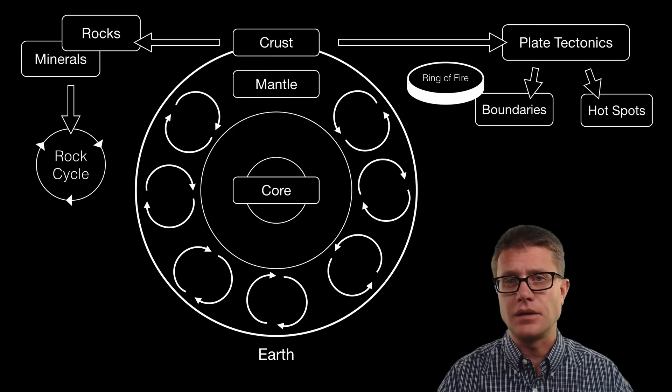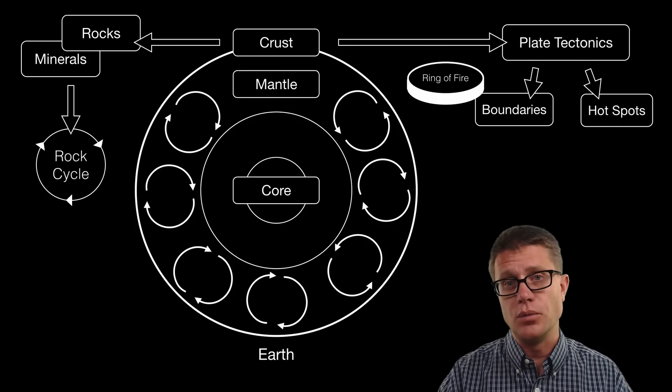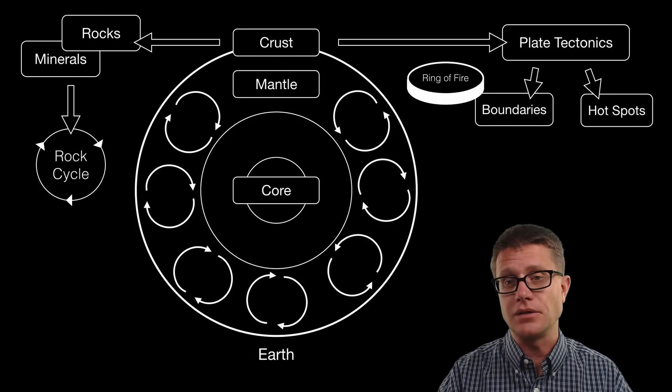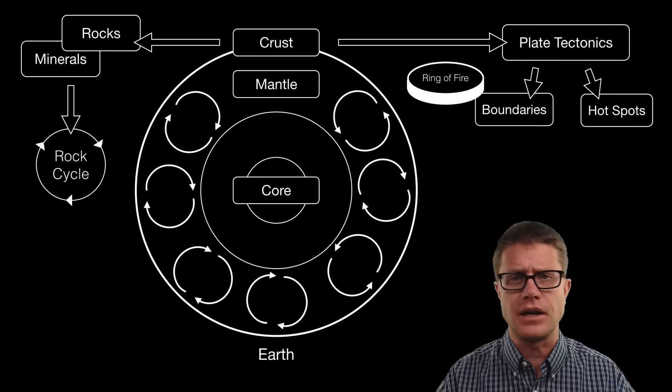We also have what are called hot spots. And those are going to be areas where a plate will move over a hot area in the mantle. And we can form islands like Hawaii.